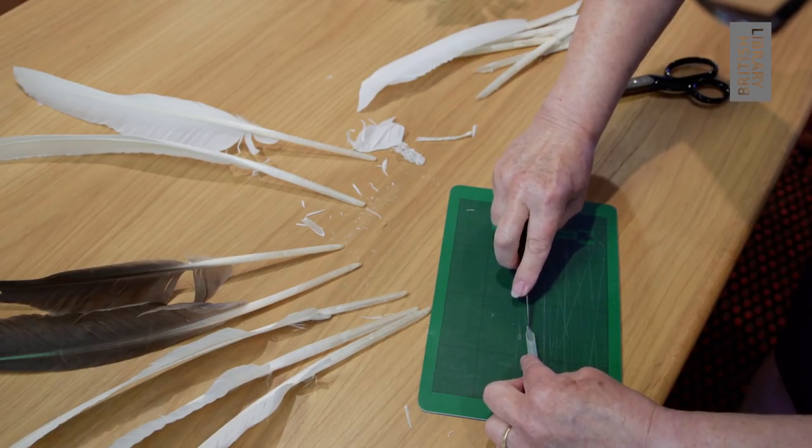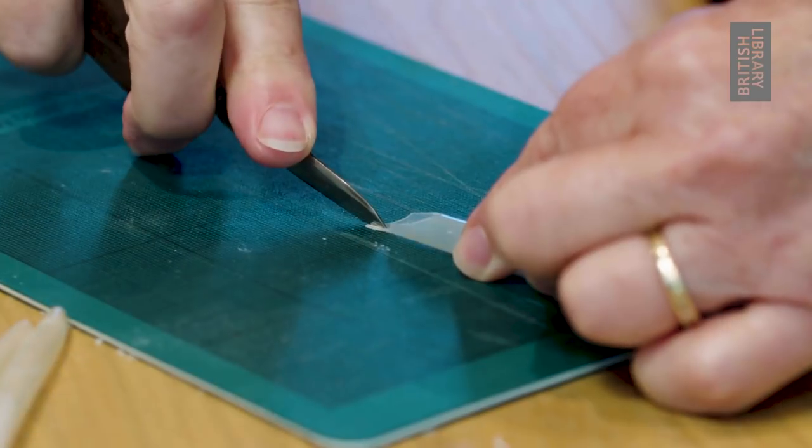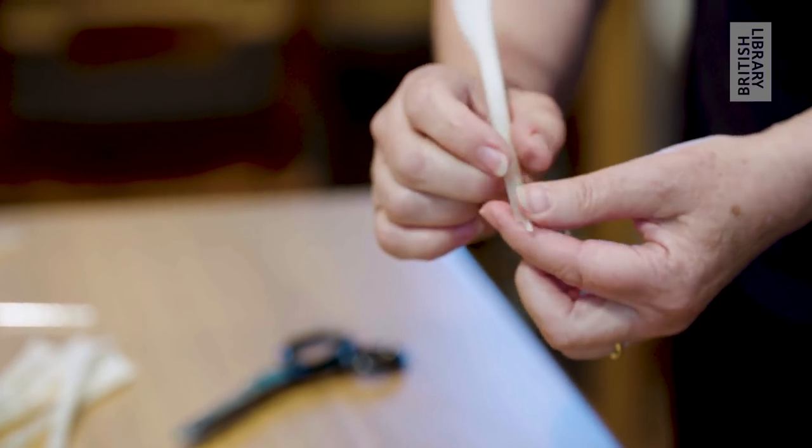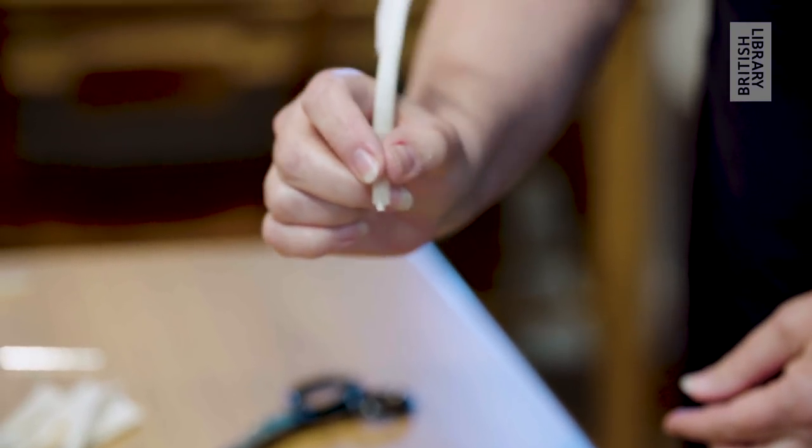This pen won't write unless there is a slit which carries the ink through down to the tip of the nib. So the slit needs to be put in next, and now that feather's changed into a quill.